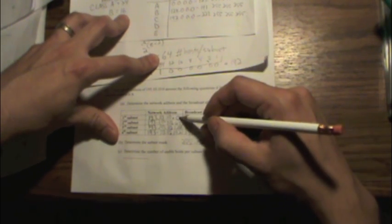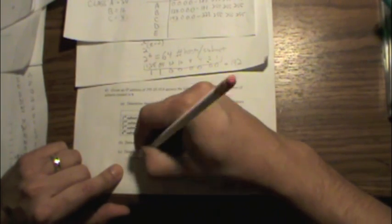The number of usable hosts per subnet. Well, we know the subnet size is 64. And we can't use the network address. And we can't use the broadcast address for hosts to assign to like PCs or servers or routers. So we have to subtract 2 from 64, and we get 62.